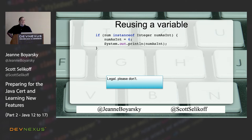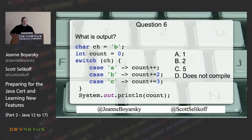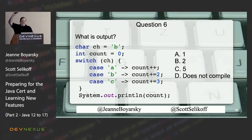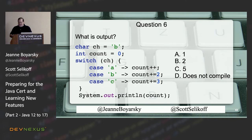First practice question on switch expressions: show of hands for each letter. The answer is B. It's a relatively well-behaved switch expression — no particularly tricky cases. It assigns a value rather than returning one from a method.